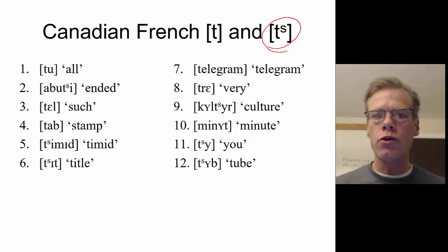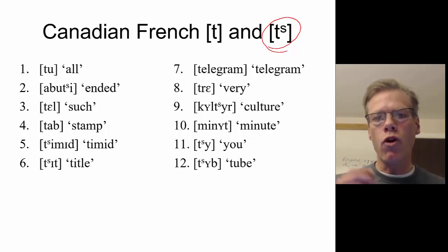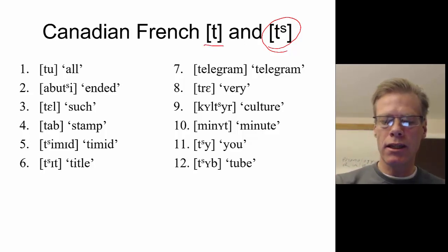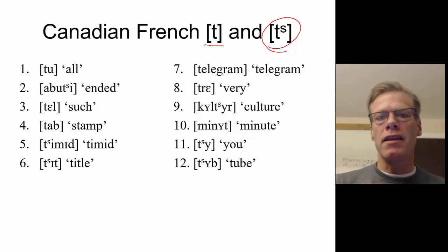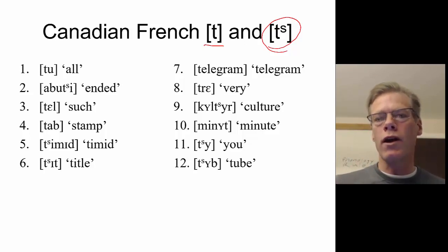Now, when I go through this, I'm already going to begin with a hypothesis — that these are probably allophones of the same phoneme. Moreover, I'm guessing that t is probably going to be the underlying representation: that underlyingly it's a phoneme t, and it becomes an affricate in a certain environment. The reason I'm hypothesizing that is because t is a very common sound cross-linguistically, whereas that phone ts is less common.